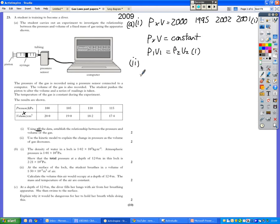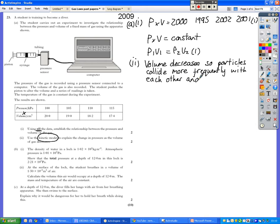Now this is similar to the kinetic theory one we've just looked at. So using the kinetic model, any time you see that, you know that you're going to have to use your three Fs, or maybe only two, it depends on what's involved. Explain the change in pressure as the volume of gas decreases. So, volume decreases. So particles collide more frequently. There's the first of our Fs. More frequently with each other and the container walls.